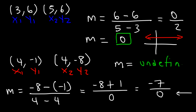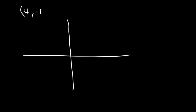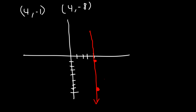What does that mean in terms of a graph? Basically, the graph is a vertical line. A vertical line has an undefined slope. So if you were to plot these two points — the point 4, negative 1 and also 4, negative 8 — you'd get a vertical line. So the slope of any vertical line is always undefined.